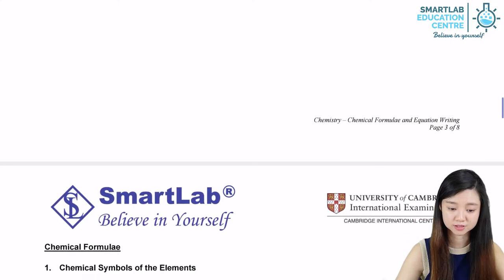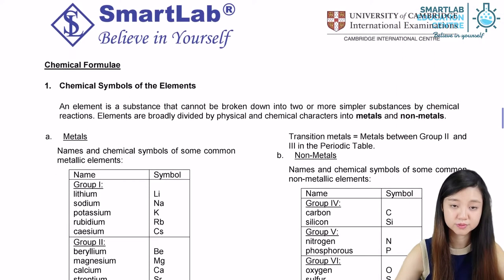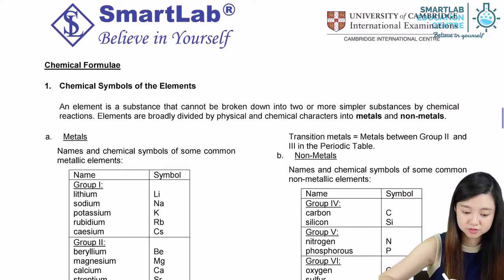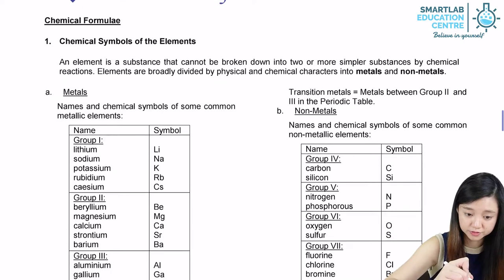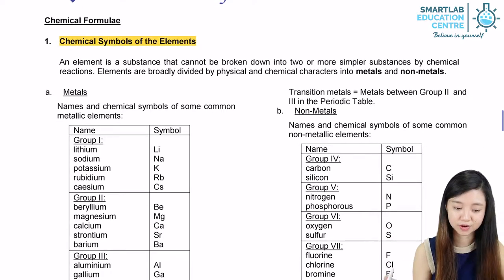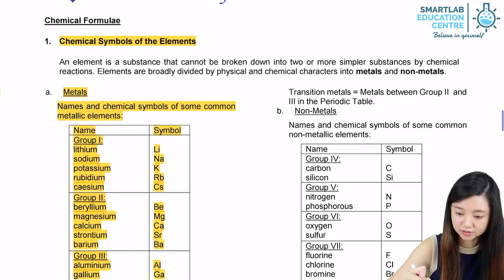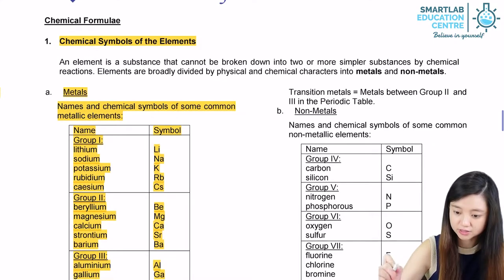Let's look at chemical formulas now. As we have mentioned earlier, the chemical symbols of elements are actually found on the periodic table. So we have our metals on the left side of the imaginary zigzag line and the non-metals on the right side of the imaginary zigzag line.